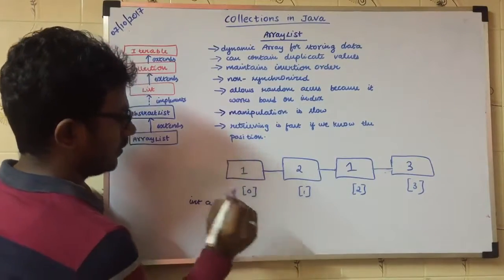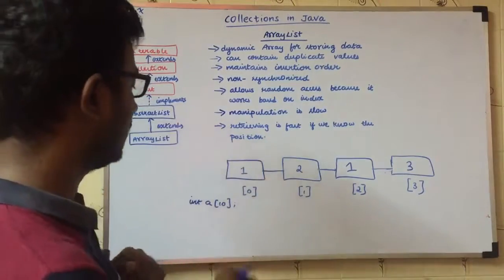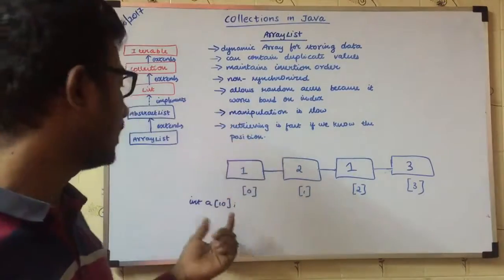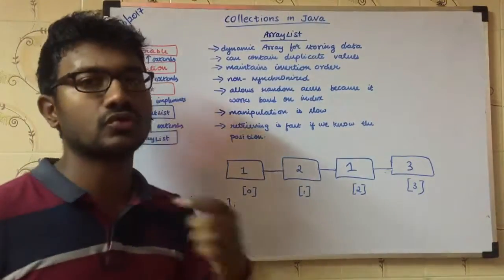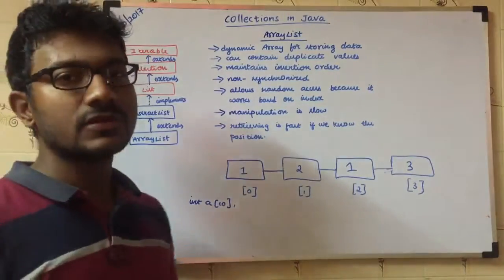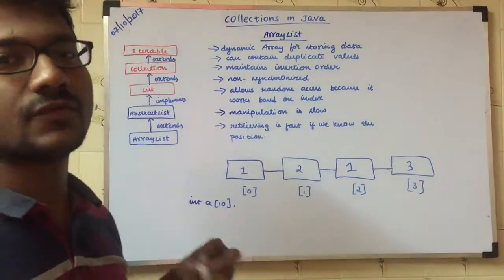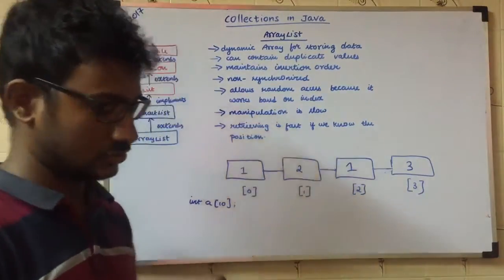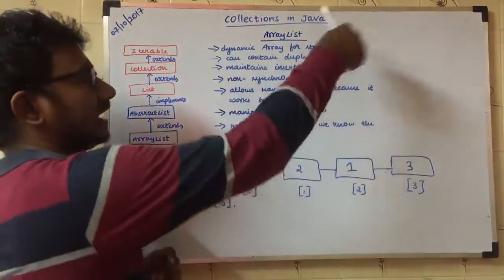ArrayList is a dynamic array to store the data. We are not going to store the data in just 10 elements. We will define the data in just 10 elements, but we will not be able to use the data in just 10 elements. This is not a static array, it's a dynamic array.